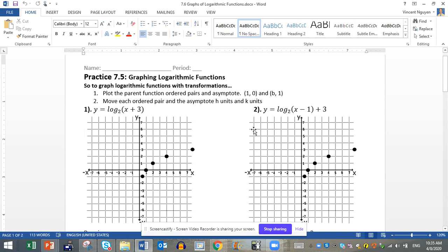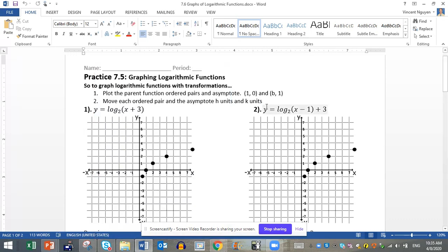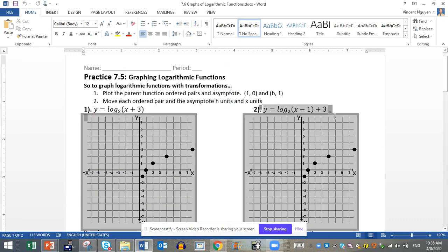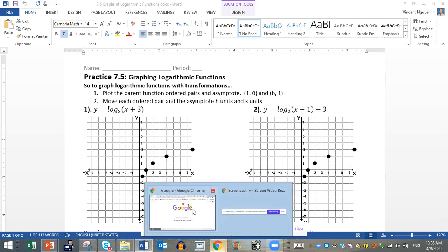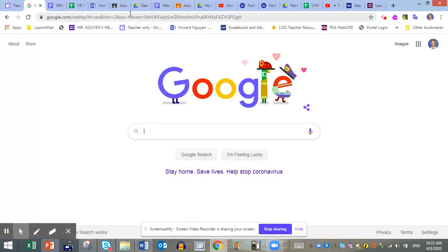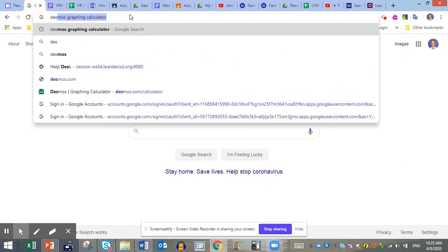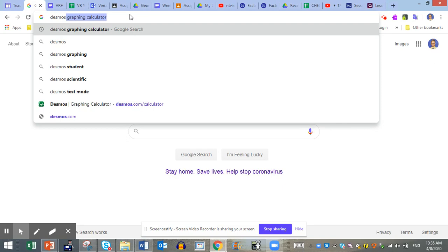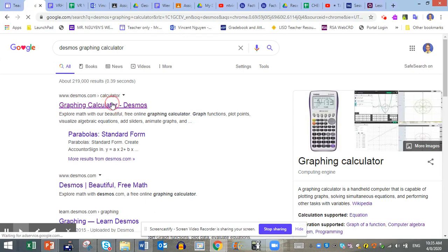So here's an example. Let's say I have this equation. I am going to copy this equation with Ctrl C, and then I will go to my Chrome and type in Desmos graphing calculator in my search bar, and then I click on the first link.